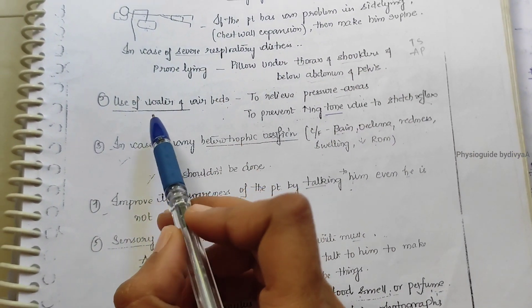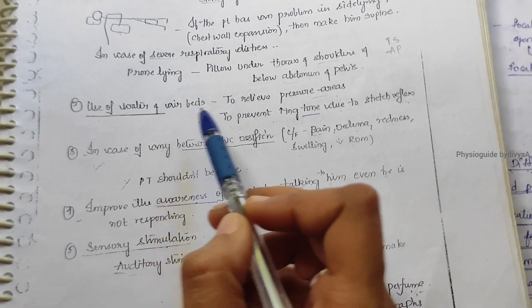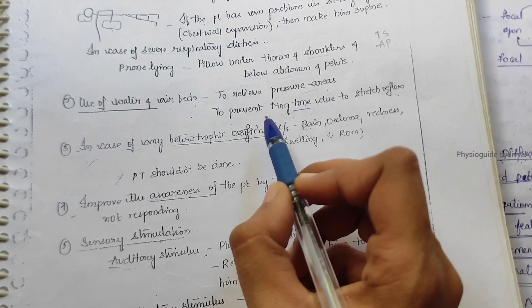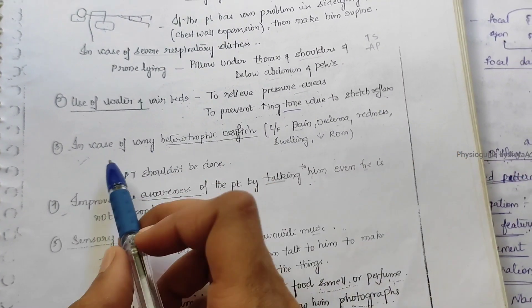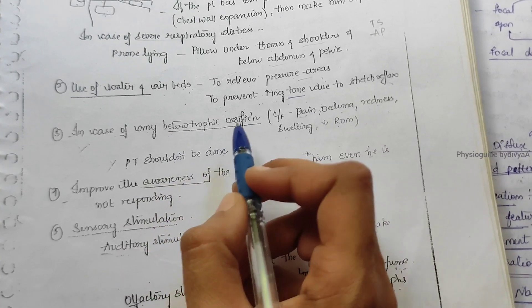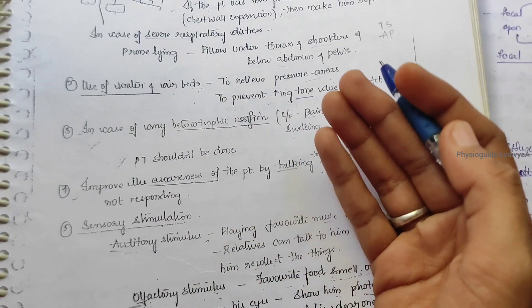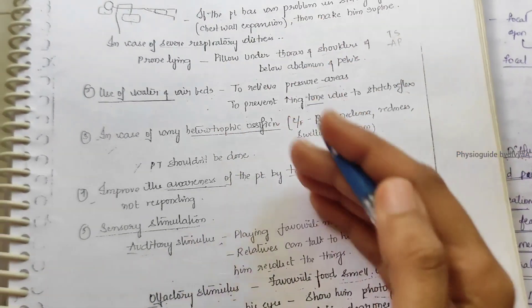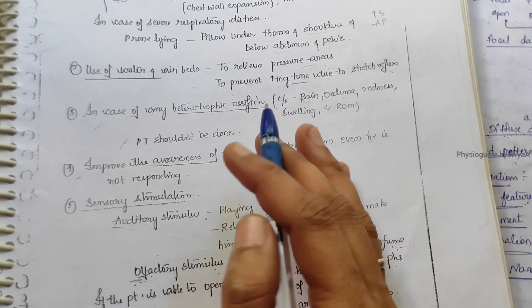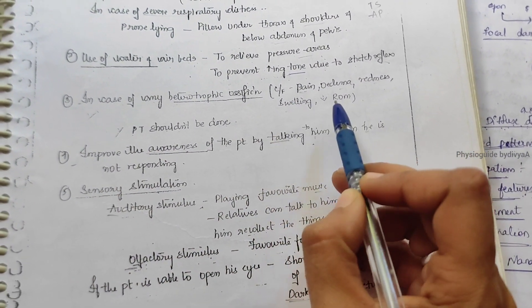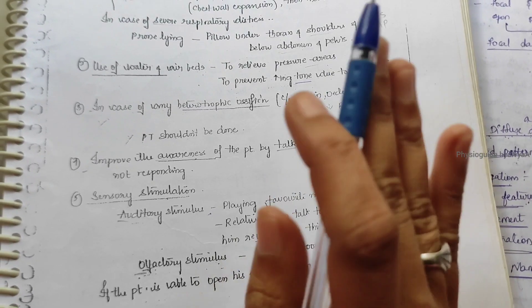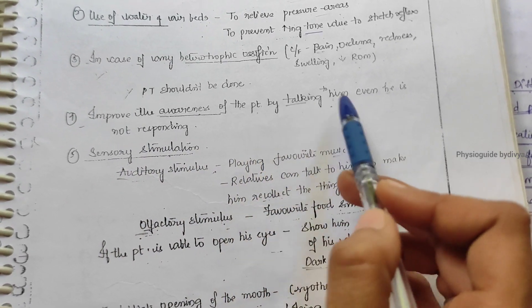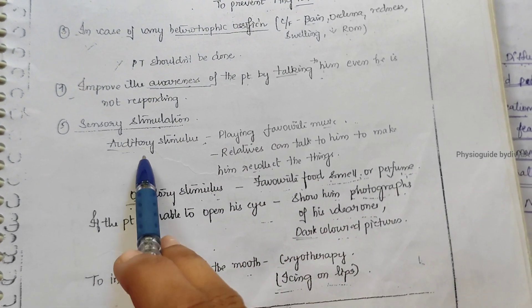Use water and air beds to relieve pressure areas on the legs and prevent increased tone due to stretch reflex. In case of heterotrophic ossification with symptoms like pain, edema, redness, swelling, and decreased ROM, physiotherapy shouldn't do anything until these conditions are decreased. Improve patient awareness by talking to them even if they're not responding.